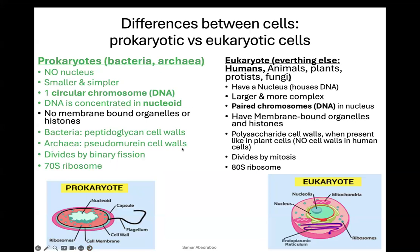At a big level, what are the main differences? Prokaryotes — which make up bacteria and archaea — do not have a nucleus. Eukaryotes — which make up human cells, animal cells, plant cells, and everything else that's living that's not bacteria or archaea — have a nucleus, and the function of the nucleus is to protect the DNA. Prokaryotes do not have organelles. Organelles are things like mitochondria and the ER. Eukaryotes have organelles like mitochondria, endoplasmic reticulum, Golgi, etc.